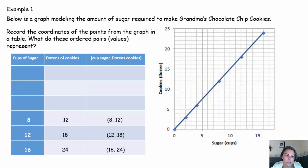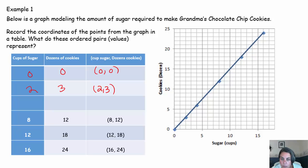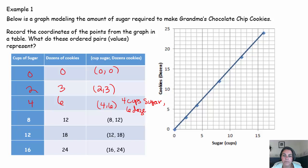Let's look at these points. This would be (0, 0). This point would be (2, 3). And this point would be (4, 6). What does it mean in terms of this problem? It means with four cups of sugar, you can make six dozen cookies. The first coordinate tells you how many cups of sugar you have; the second coordinate tells you how many dozen cookies you can make.